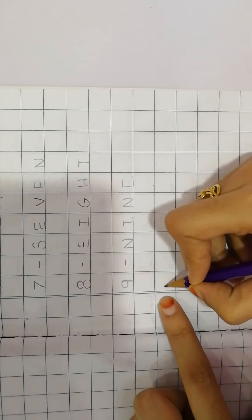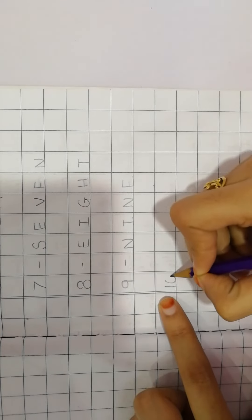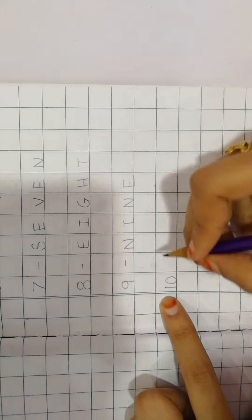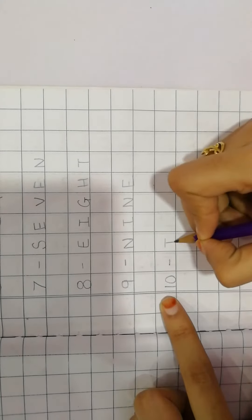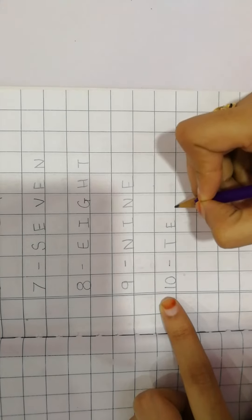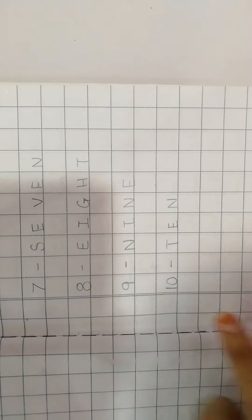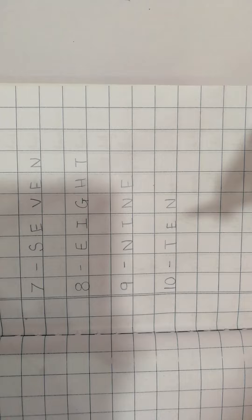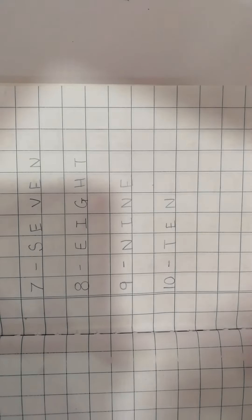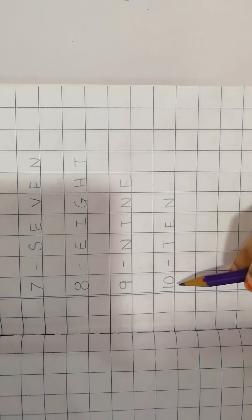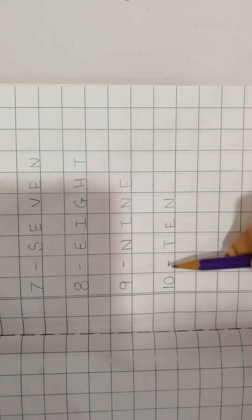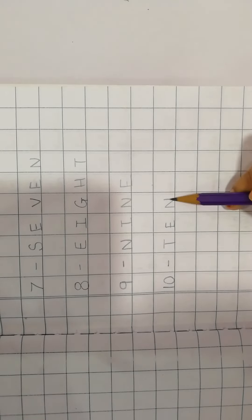9 and number 10. 1, 0, 10. 10 dash T-E-N 10. So children, this is number T-E-N 10. Isn't it easy? 10 dash T-E-N 10.